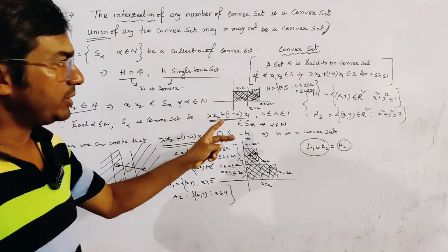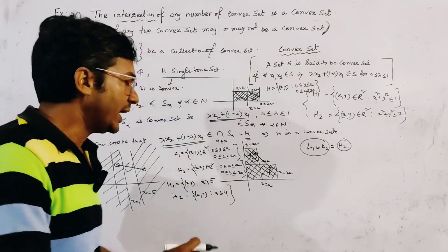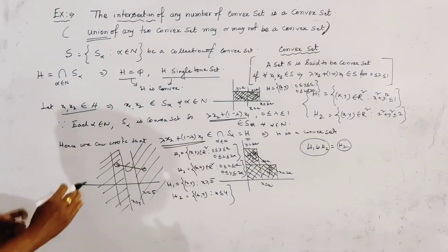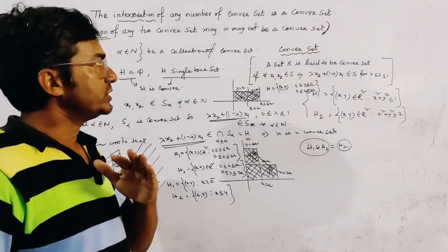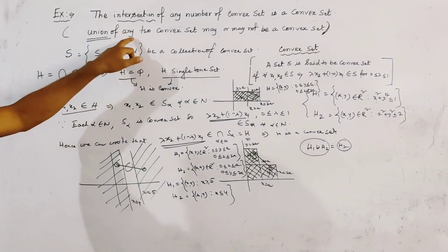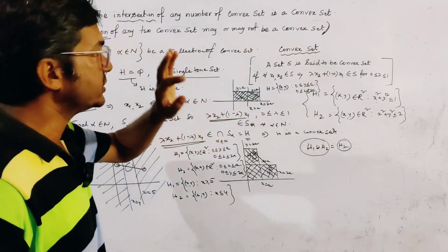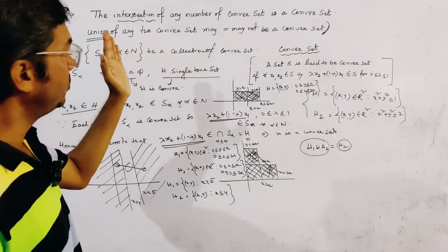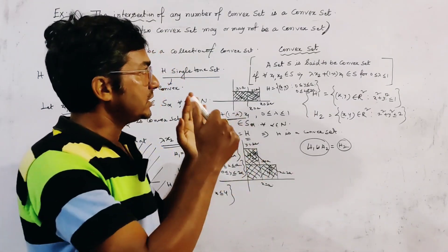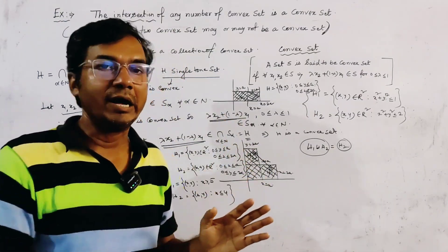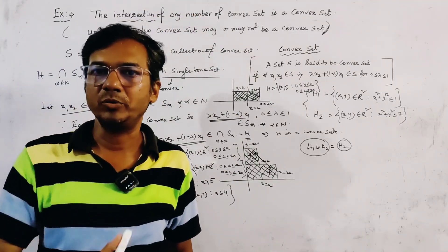So we gave two examples where the union of two convex sets becomes a convex set, and two examples where the union of two convex sets is not a convex set. Therefore, we say that the union of two convex sets may or may not be a convex set. These are very important results, and this is also a very important theorem of convex sets. Thank you for watching.